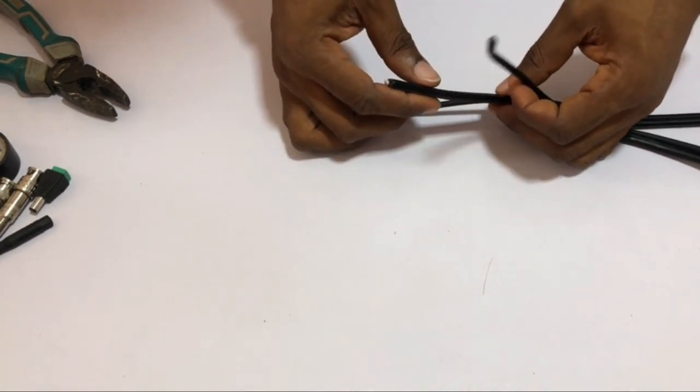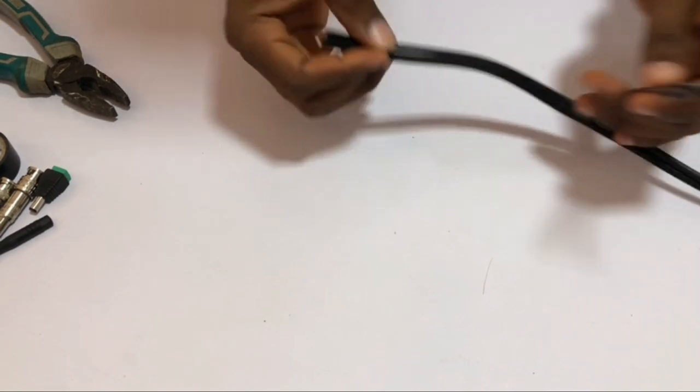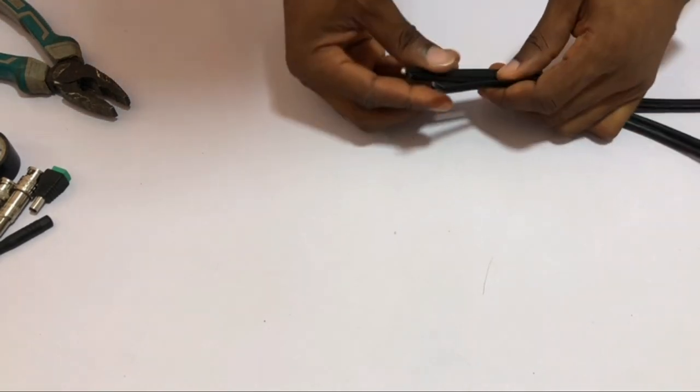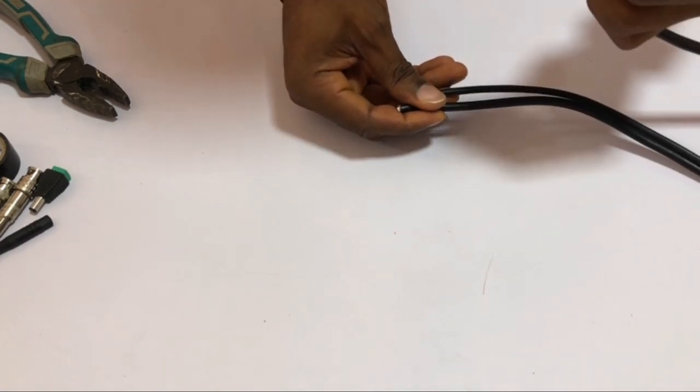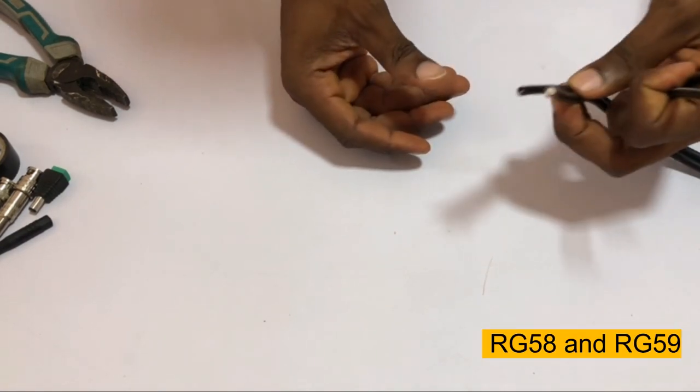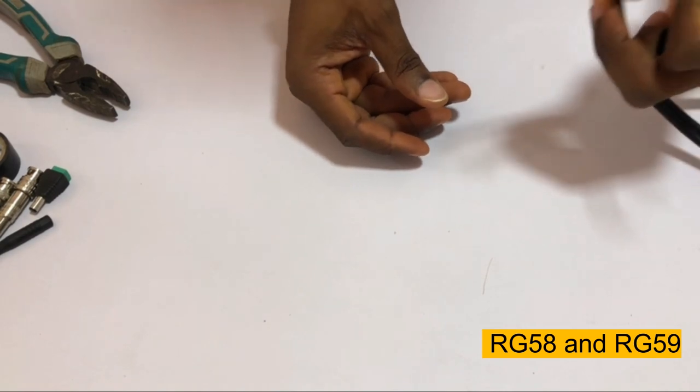Today I'm going to be showing you guys the two types of cable we use in terminating analog cameras. The first one is the RG58 and the second one is the RG59.